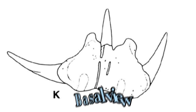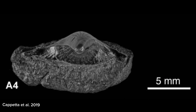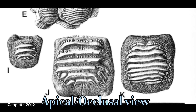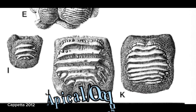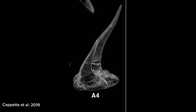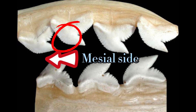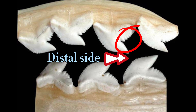If we were to look at the tooth from its tip, also referred to as the apex, we would be observing the tooth in apical view, which is also referred to as occlusal view. We can also observe a tooth from its side, which is referred to as its profile view. A profile view observed from the side of the tooth that faces towards the center of the jaw is called the mesial view, and the side that faces towards the back of the jaw is referred to as the distal view.